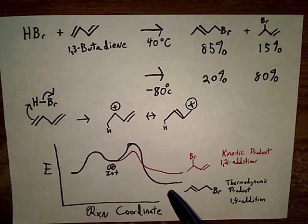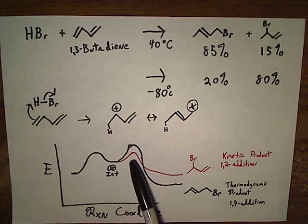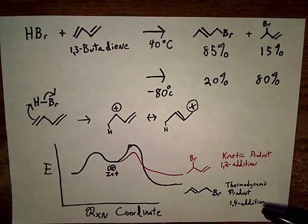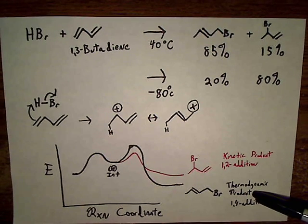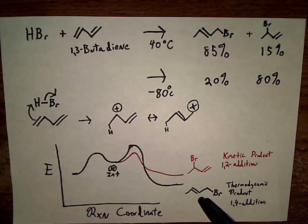So at lower temperatures, you end up with the kinetic product because it has lower activation energy. But at higher temperatures, you end up with a majority of the thermodynamic product because you have enough energy to create this more stable product.